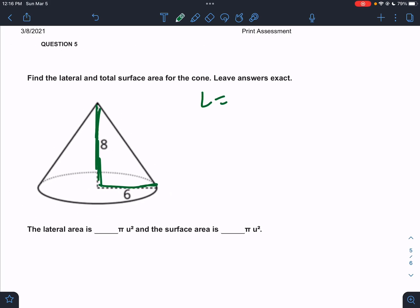So we need the lateral, which is 2π. Nope, it's a cone. I'm messing up again. It's πrl. And the total is πrl plus πr squared. So what do we need? We need r and we need l. Those are the only two letters in these formulas. r they gave us. It's 6.